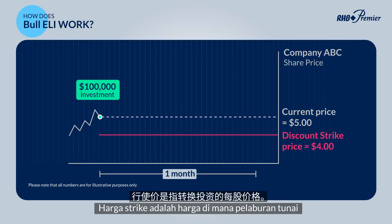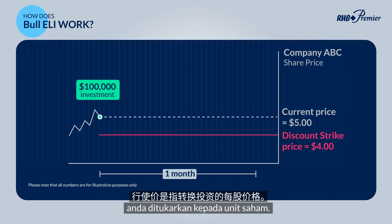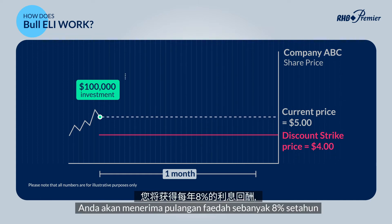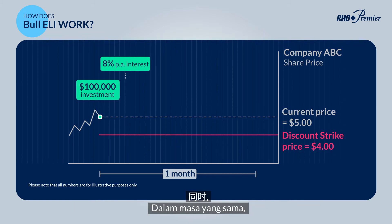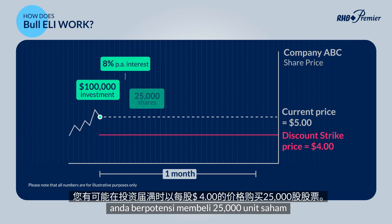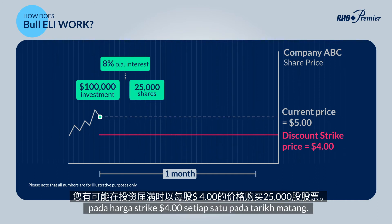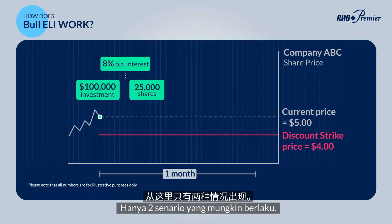The strike price is the price of each share if the investment is converted. You will receive 8% per annum interest in return, which is higher than conventional deposits. At the same time, you will be potentially buying 25,000 shares at $4 each at maturity of the investment. There are only two outcome scenarios from here on.